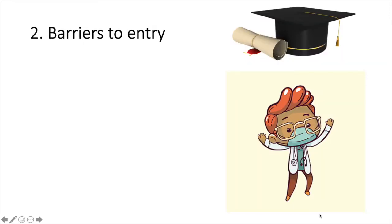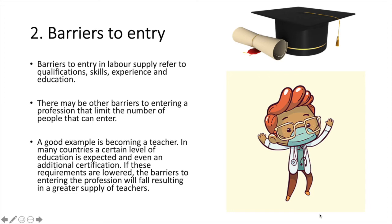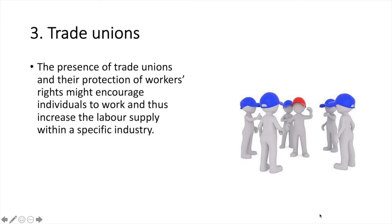2. Barriers to entry. Barriers to entry in labour supply refer to qualifications, skills, experience, and education. A good example is becoming a teacher — in many countries a certain level of education is expected and even an additional certification. If these requirements are lowered, the barriers to entering the profession will fall, resulting in a greater supply of teachers. Third, trade unions. The presence of trade unions and the protection of workers' rights might encourage individuals to work, thus increasing the labour supply within a specific industry.